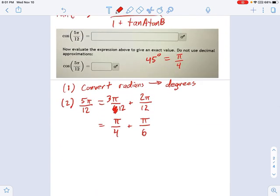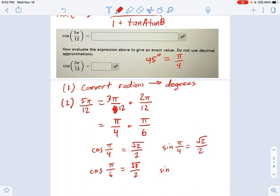If you remember, cosine of π over 4, that's like 45 degrees, that's going to be √2 over 2. Cosine of π over 6, that's 30 degrees, that's going to be √3 over 2. And likewise, you can figure out the sine and so on. I'll just write those here. Sine of π over 4, that's going to be equal to √2 over 2. And sine of π over 6, that's equal to, well, 30 degrees, that would be 1 half.